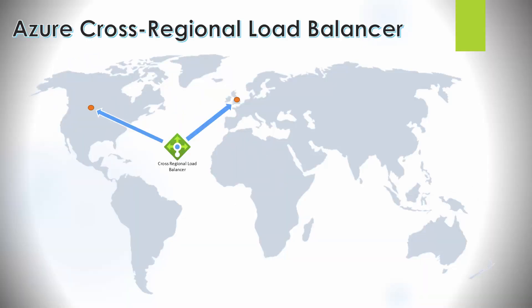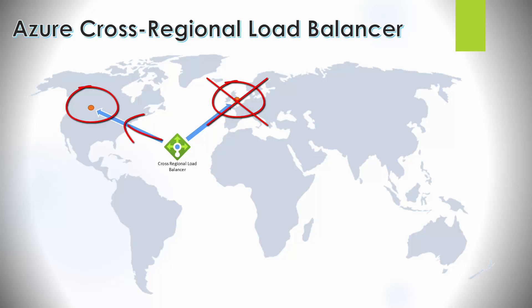We can load balance traffic across two or more regions - for example, one in the UK and another in the US. If any region fails, say the UK region, it will carry on load balancing traffic to the remaining regions. Once the failed region is back up and running, it will start load balancing traffic back to it as well.